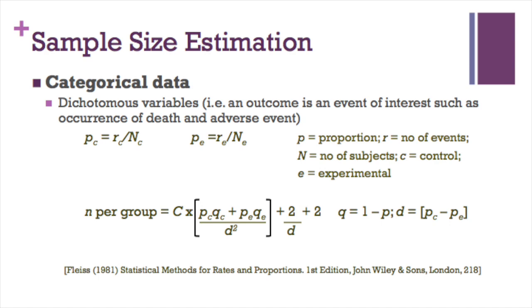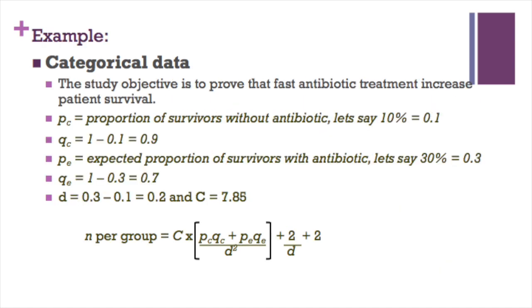For dependent categorical data with dichotomous variables such as occurrence of death and adverse event, we need to know Pc, the proportion of event occurred in the control group, and P, the proportion of event occurred in the experimental group, and d is the difference between Pc and P. For example, the study objective is to prove that fast antibiotic treatment increases patient survival. Pc is the proportion of survivors without antibiotic, let's say 10 percent. P is the expected proportion of survivors with antibiotic, let's say 30 percent. Thus d is 0.2.